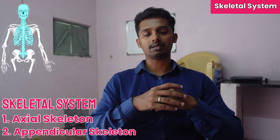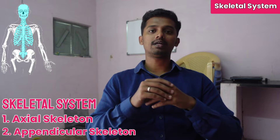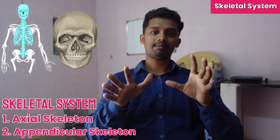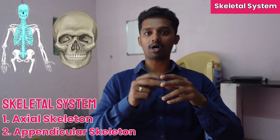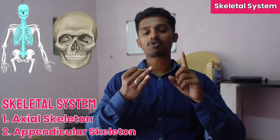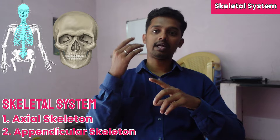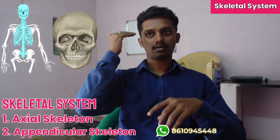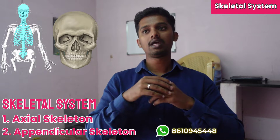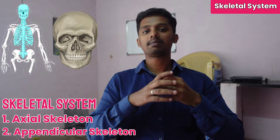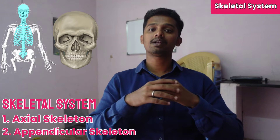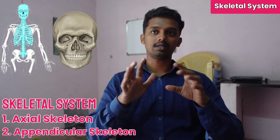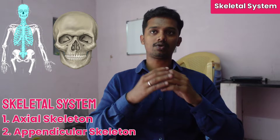Under the axial skeleton, we study the bones of the skull. There are two types of skull bones: bones of the cranium and bones of the face. The cranium protects the brain — it is the top region of the skull. There are 8 cranial bones and 14 facial bones, making a total of 22 bones in the skull.